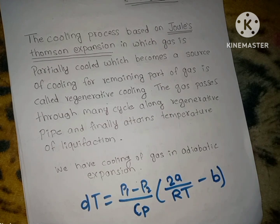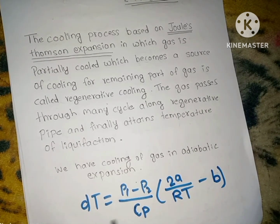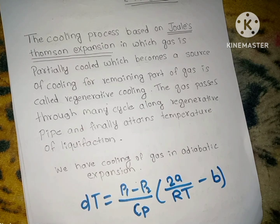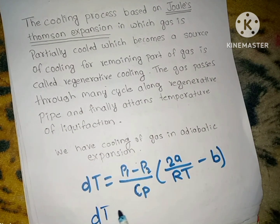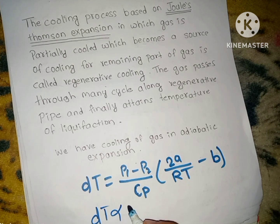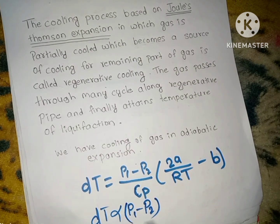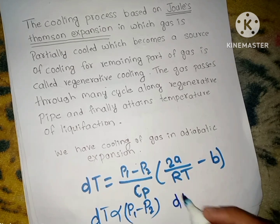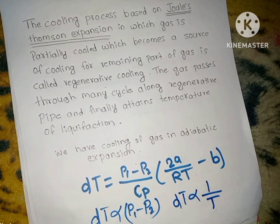This equation applies to a Van der Waals gas that will adiabatically expand. From this equation, dT is directly proportional to (P1 - P2), and dT is inversely proportional to temperature T.